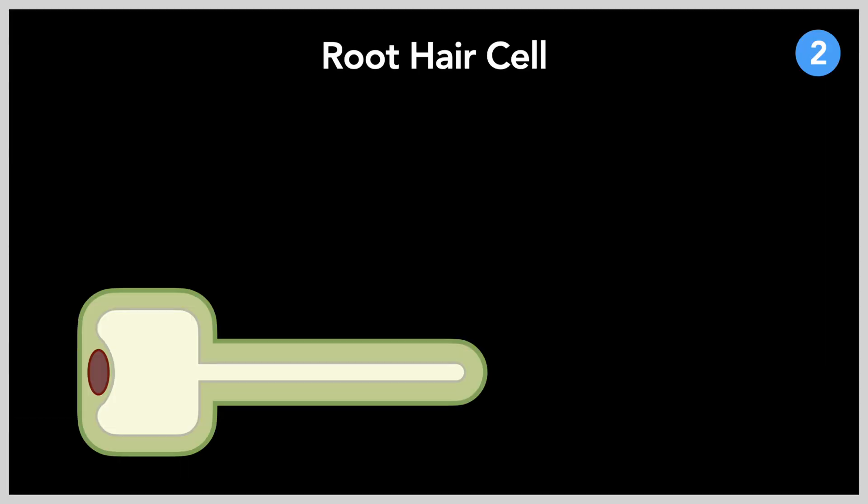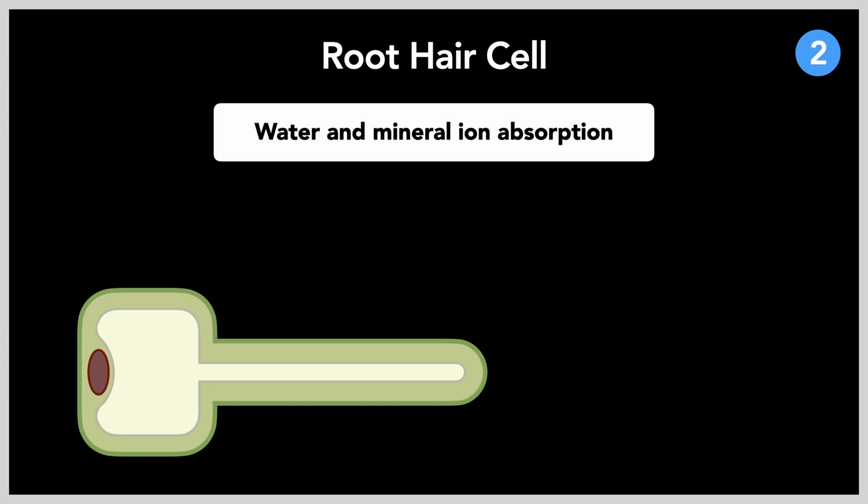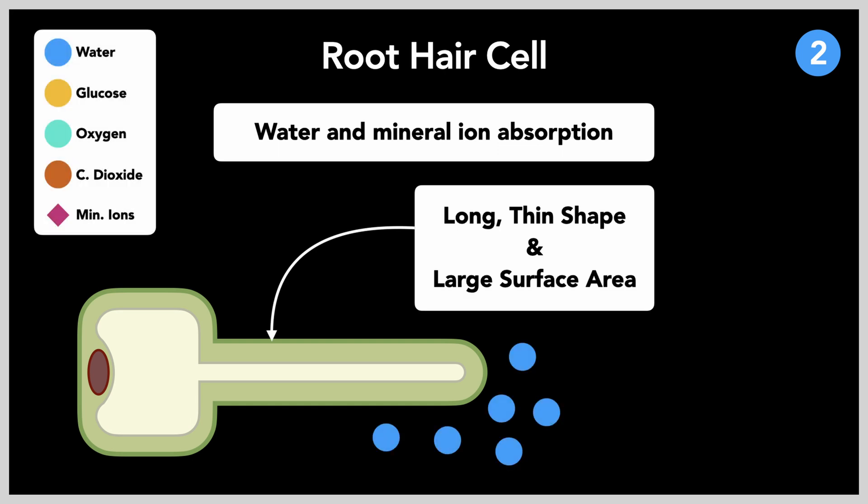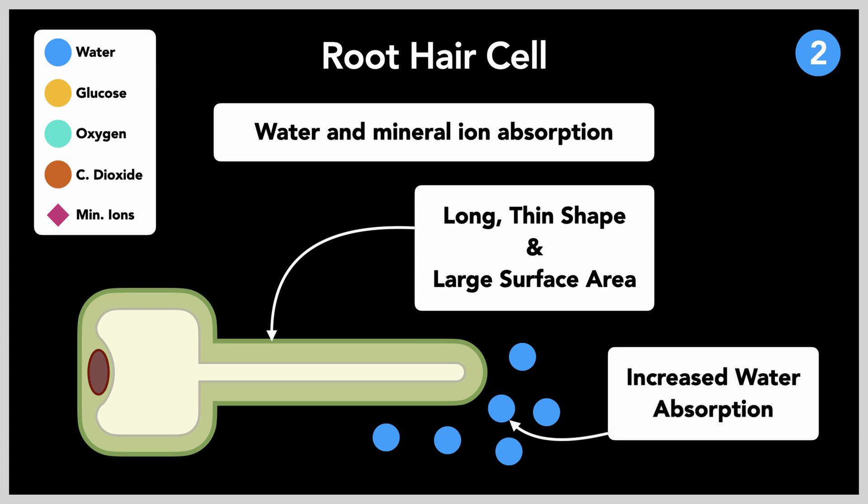The root hair cells facilitate water and mineral absorption for the plant, water being one of the main reactants in photosynthesis. Its long and thin shape, along with its large surface area, allows these cells to reach the small crevices between soil particles, and exponentiates the absorption of water molecules.